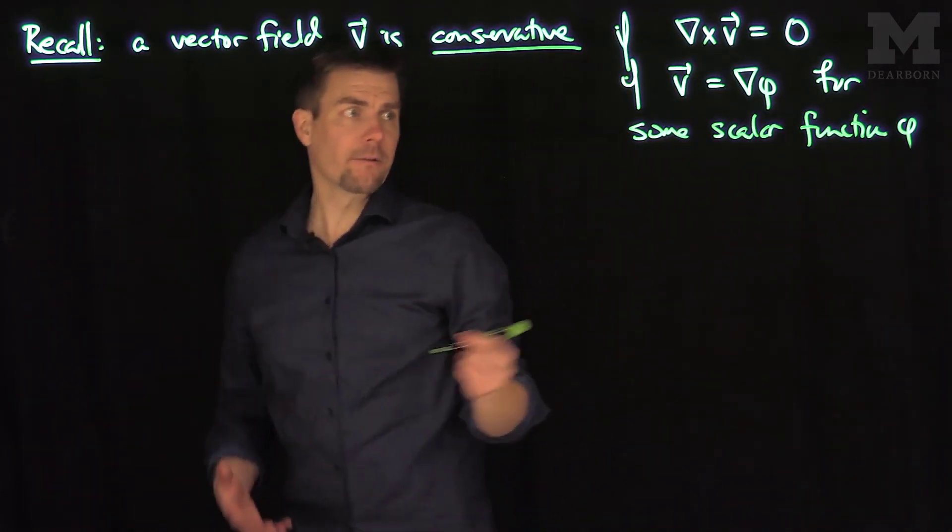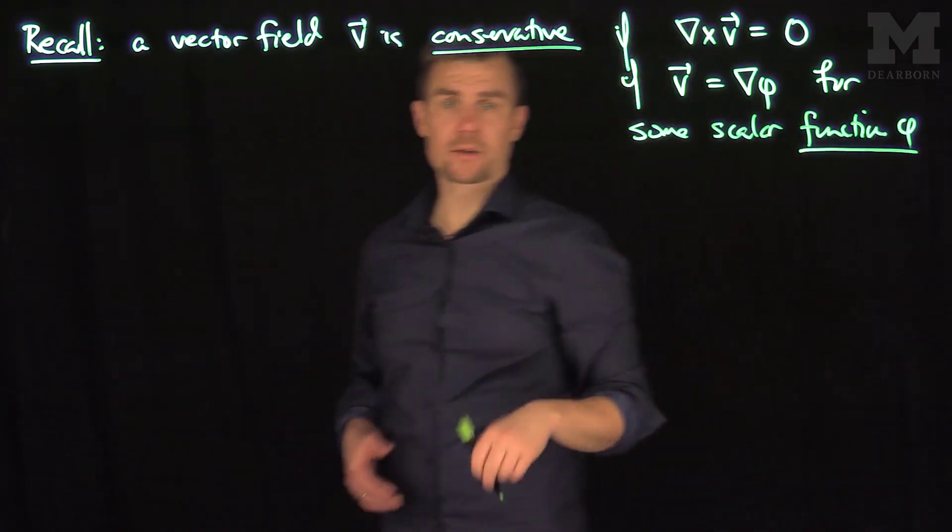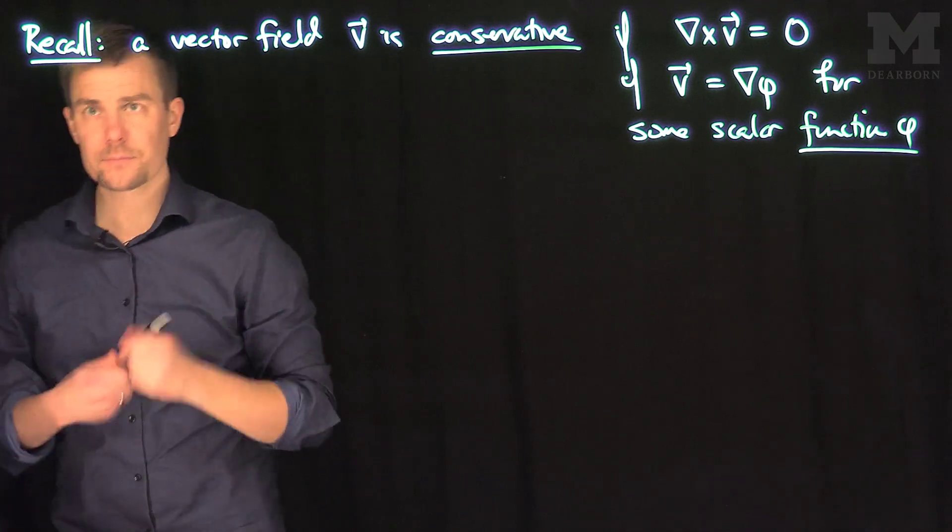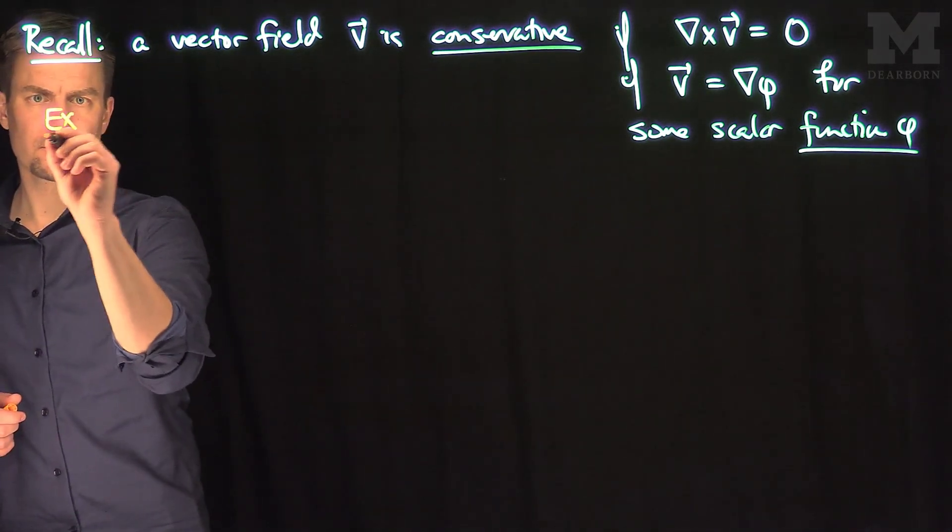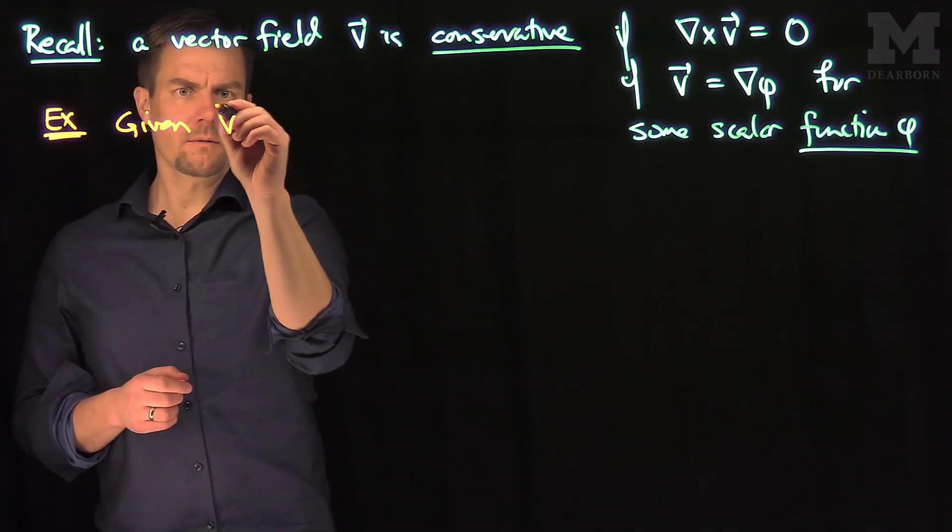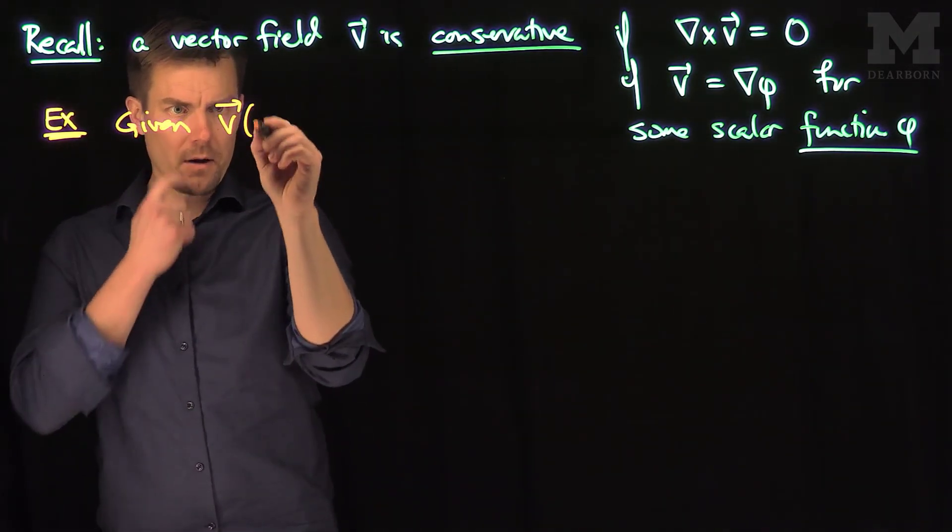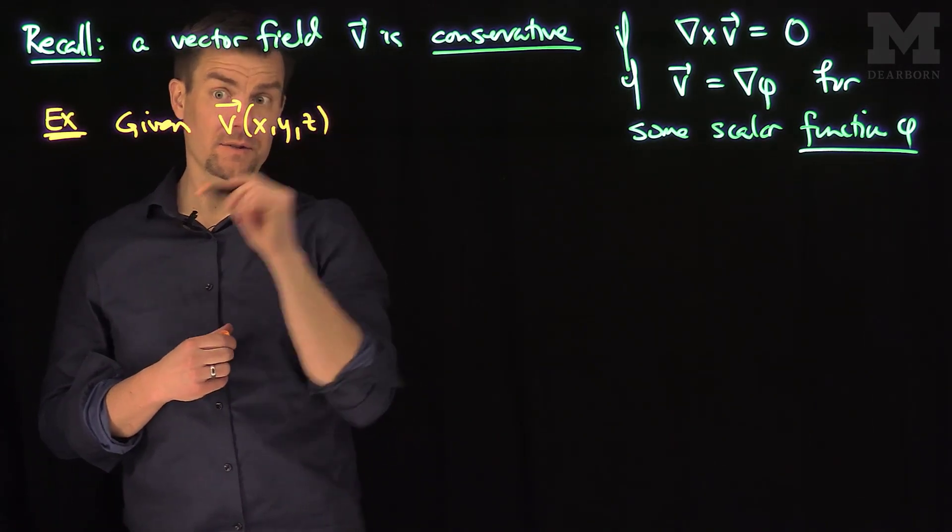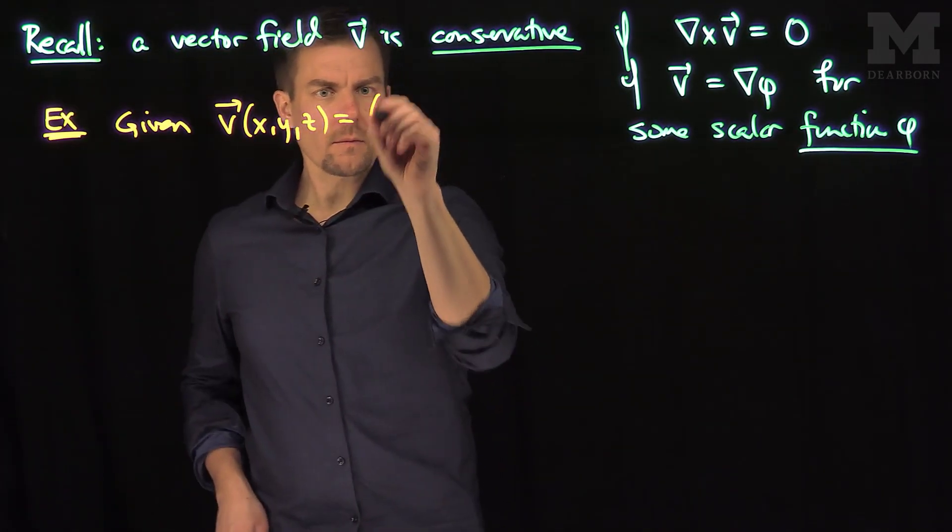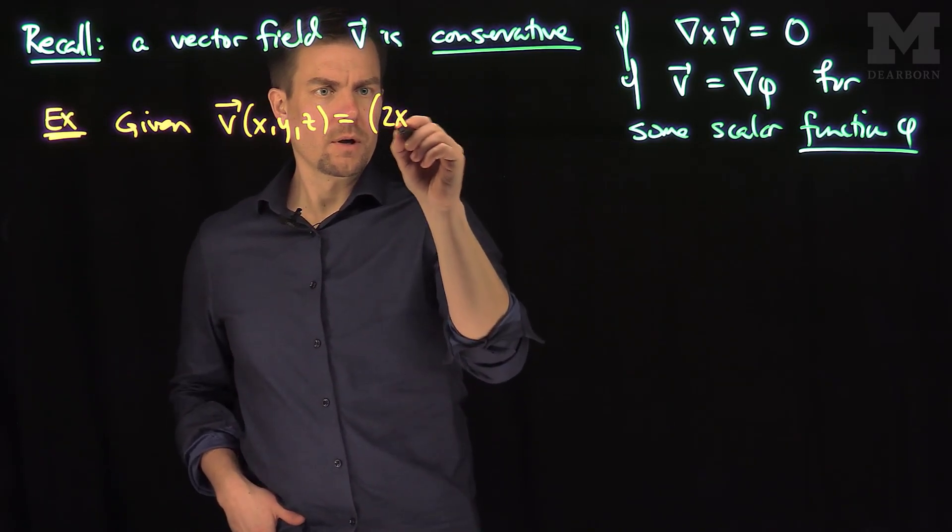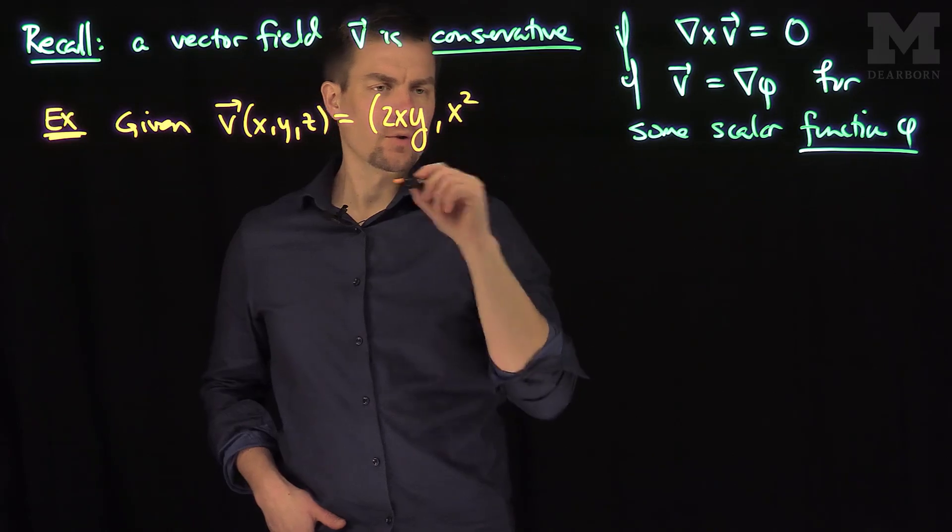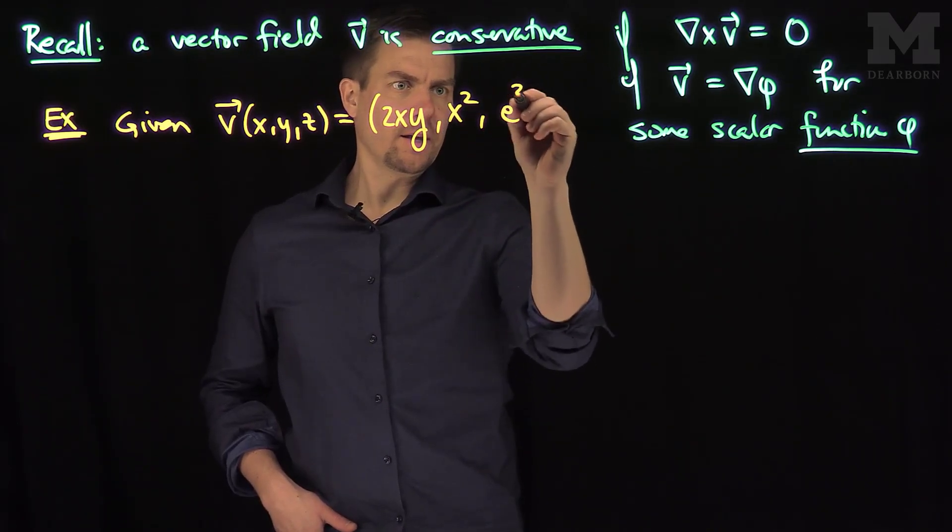In this video we'll see how to find such a scalar function if the vector field is conservative. So here's an example. Let's be given V of X, Y, and Z. And V is going to be equal to 2XY, and then X squared, and then E to the Z.